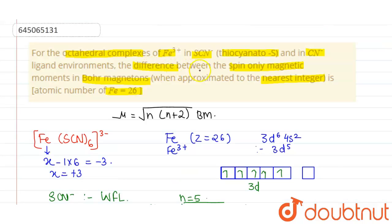The difference in magnetic moment in Bohr magnetons approximated to nearest integer is 4 BM. Thank you.